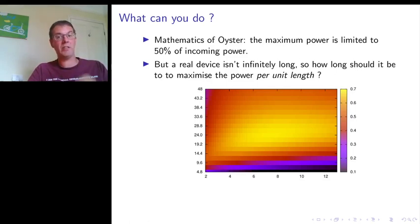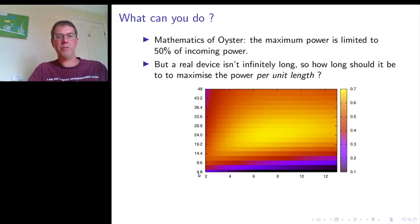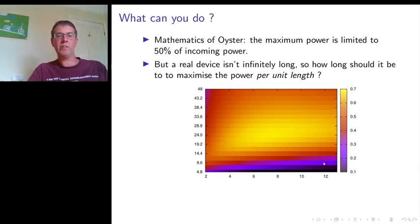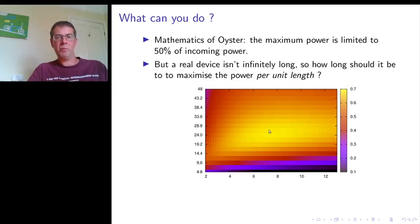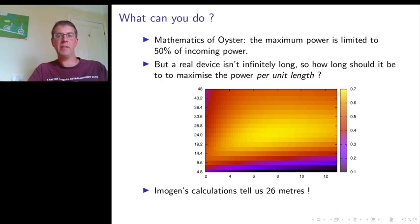These theoretical results are for infinitely long devices, but of course nothing is infinitely long — you're interested in optimizing the power per unit length. This is one of her computations from her PhD. The horizontal axis shows the length of the device, and the heat map shows the amount of power extractable. The brightest spot is the point at which you want to design your Oyster wave energy device. She predicted from this mathematical calculation that the Oyster flap needed to be about 26 meters long to get the maximum power per unit length.